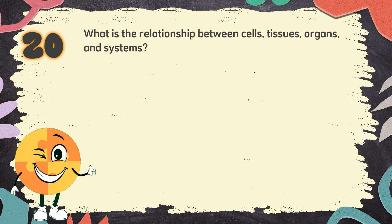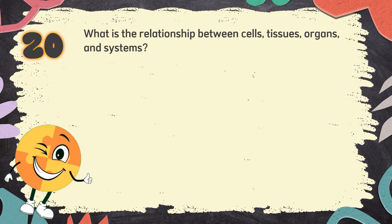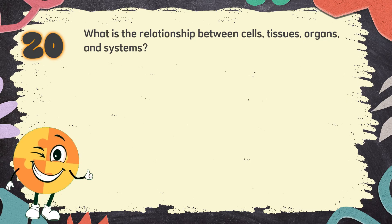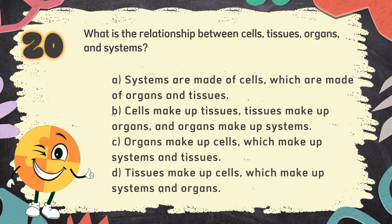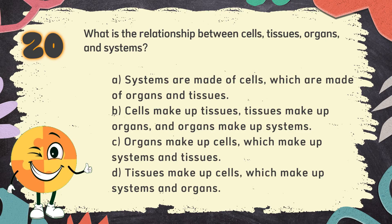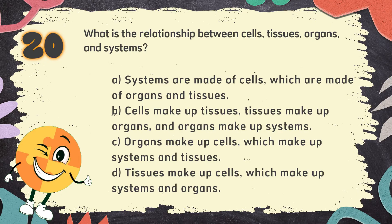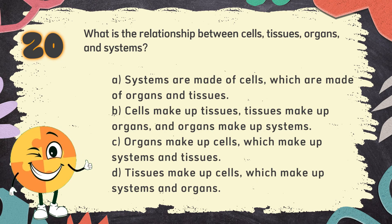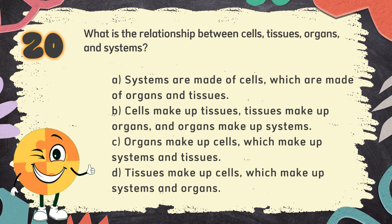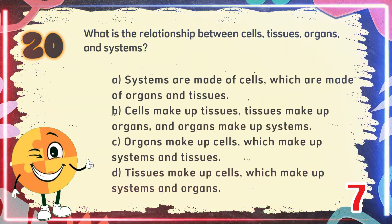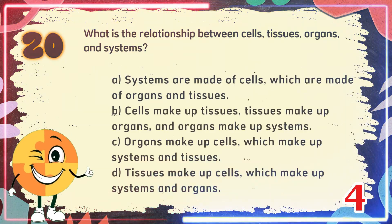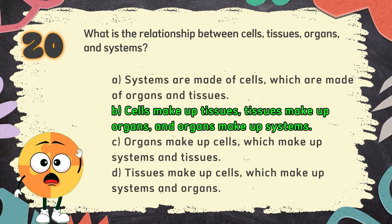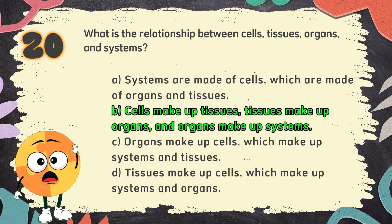Number 20: What is the relationship between cells, tissues, organs, and systems? The choices are: A. Systems are made of cells, which are made of organs and tissues. B. Cells make up tissues, tissues make up organs, and organs make up systems. C. Organs make up cells, which make up systems and tissues. D. Tissues make up cells, which make up systems and organs. The correct answer is B. Cells make up tissues, tissues make up organs, and organs make up systems.